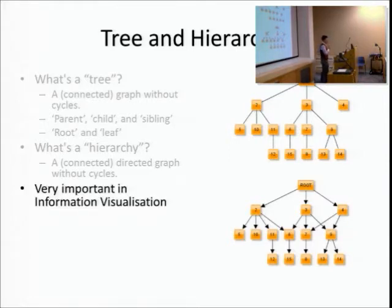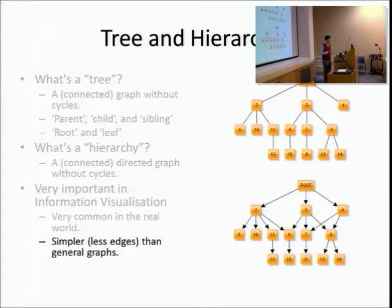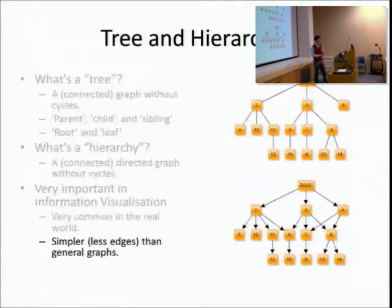Why do we spend so much time on trees and hierarchies? Because they are very common in the real world, and more importantly they are simpler in terms of data structure complexity. Having fewer edges and constraints like no cycles makes many algorithms practical on fairly large trees and hierarchies that would be impractical on general graphs.